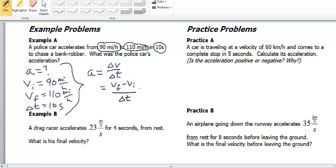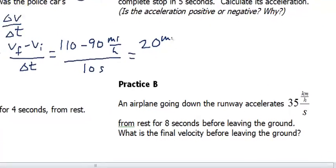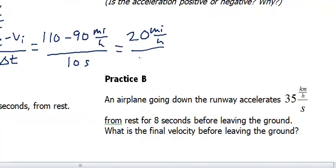So, if you plug these numbers in, we get 110 minus 90 miles per hour, occurring over a period of 10 seconds. So, the change in velocity was 20 miles per hour over 10 seconds equals a rate of change of 2 miles per hour per second.